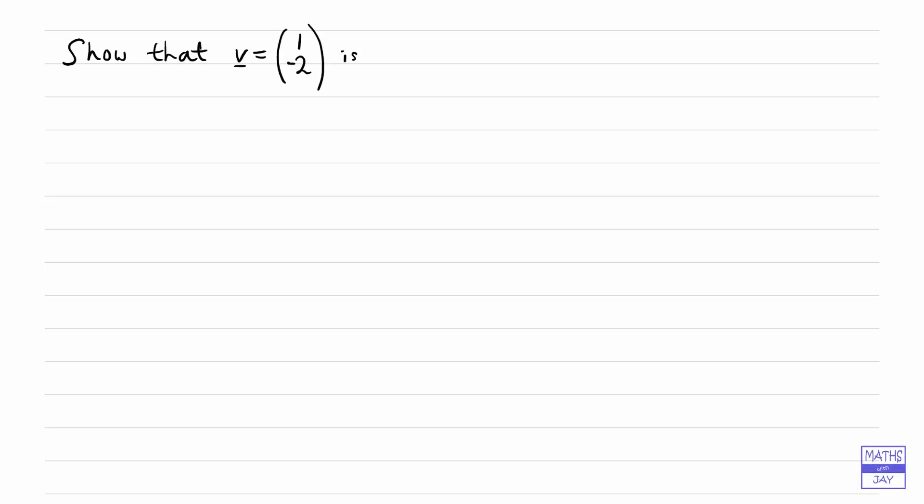So here we're given an eigenvector of a 2 by 2 matrix and we want to show that it is an eigenvector and to find the corresponding eigenvalue. Now we've already looked at an example where we've started with a 2 by 2 matrix and found both the eigenvalues and eigenvectors, but this kind of question is a lot simpler when you're already given an eigenvector.